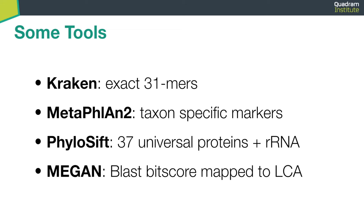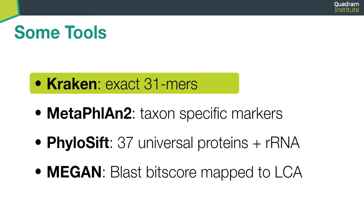And finally, there is Megan, which uses BLAST bit scores to assign each alignment to the lowest common ancestor of a sequence. So it's good to have an idea of what is on the shelf.